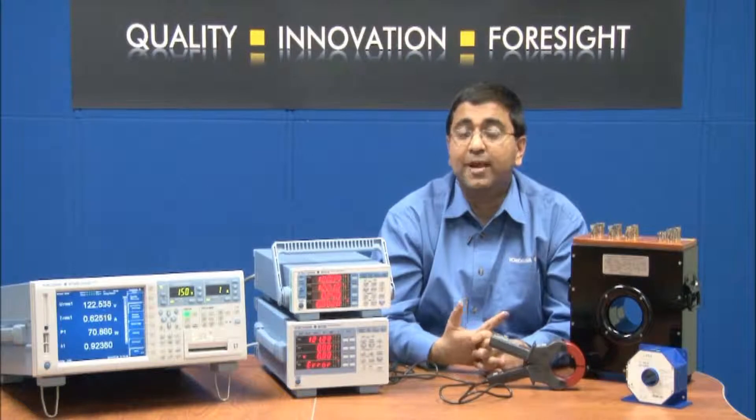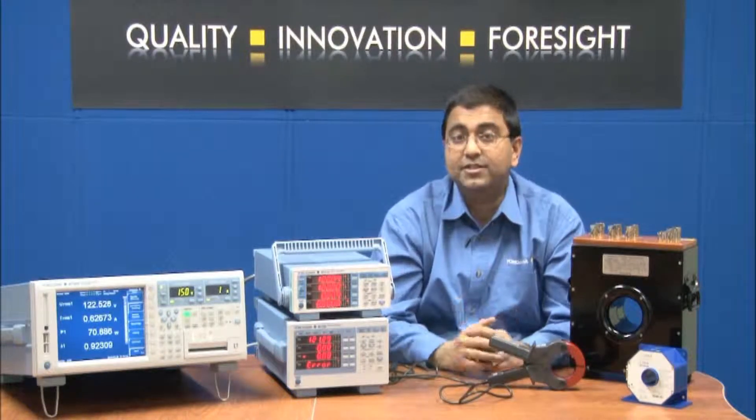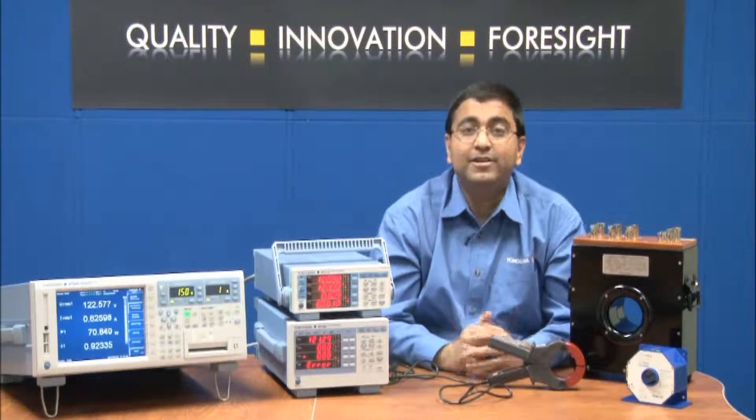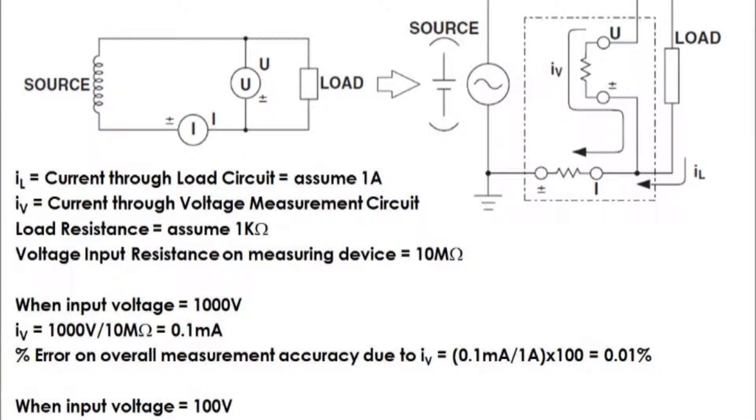Depending on the amplitude of your current signal and the input resistance of the measuring device, wiring the circuit to match the load can minimize the effects of power loss on the overall measurement accuracy. Taking Yokogawa power analyzers as an example, here is my first case.